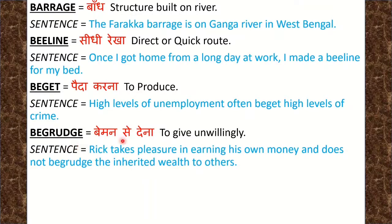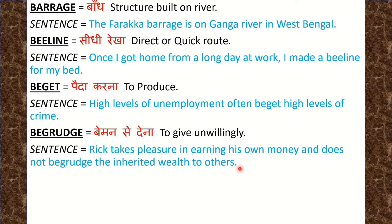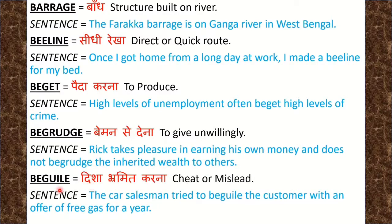Next word is Begrudge. Begrudge means बेमन से देना, to give unwillingly. Sentence: Rick takes pleasure in earning his own money and doesn't begrudge the inherited wealth to others. Rick को पैसा कमाने में मज़ा आता है, पर उसे अपना पैसा दूसरों को देने में भी बेमन नहीं होता — वो खुशी से देता है.